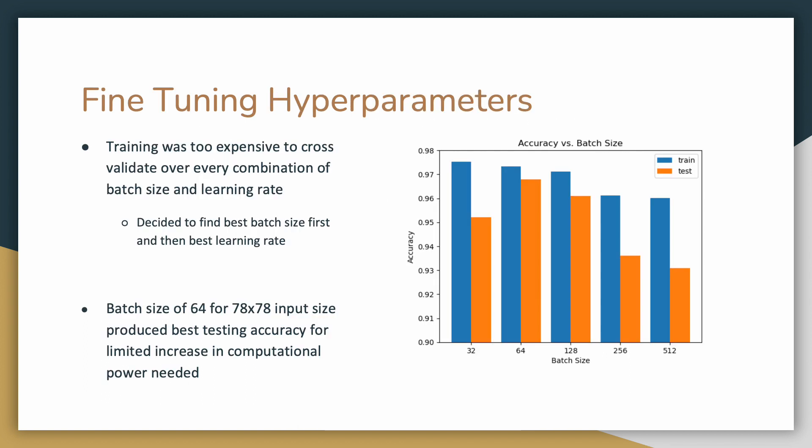In order to increase the effectiveness of our classification model, we decided to fine-tune its hyperparameters. Because of the very computationally expensive nature of training our model, we decided to tune the parameters one by one rather than testing every single combination of them. This is a naive way of cross-validating the parameters, but as we'll see, it still allows us to achieve a very effective model.